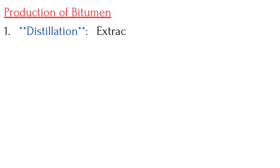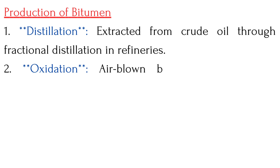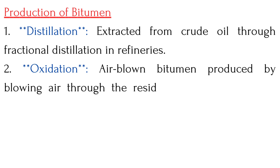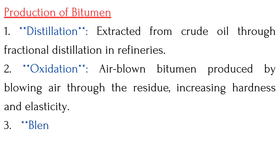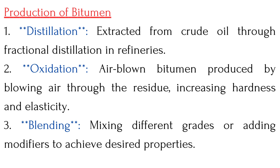The production of bitumen involves three stages. First, Distillation: bitumen is extracted from crude oil through fractional distillation in refineries. Second, Oxidation: air-blown bitumen is produced by blowing air through the residue, which increases its hardness and elasticity. Third, Blending: mixing different grades or adding modifiers to achieve the desired properties.